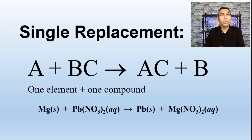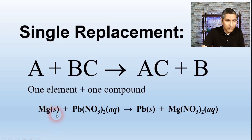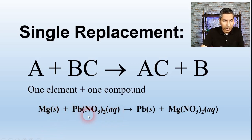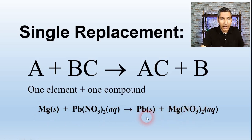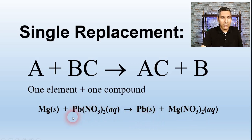Here's a good example of a single replacement reaction. Magnesium in its solid state is reacting with a solution of lead nitrate, and the magnesium literally kicks out the lead from the compound — it's replacing it. Magnesium gets with the nitrates to form magnesium nitrate solution, and then lead solid is kicked out as the other product.